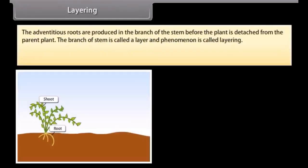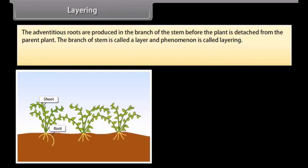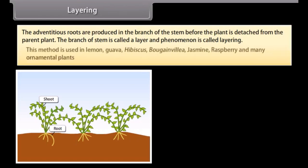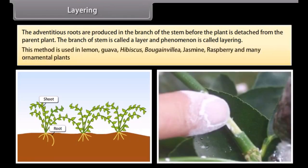Layering. Adventitious roots are produced in the branch of the stem before the plant is detached from the parent plant. The branch of the stem is called a layer, and the phenomenon is called layering. This method is used in lemon, guava, hibiscus, Bougainvillea, jasmine, raspberry, and many ornamental plants.